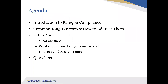Let's take a brief look at the agenda. First, we'll begin with a brief overview of Paragon Compliance — who we are and what services we provide. Next, I'll review some common 1095-C errors. We deal with a host of different clients from public and private sectors with unique compliance challenges, and we'll go through the more common errors, explain what causes them, and how best to address and avoid them. We'll also discuss Letter 226-J — what these letters are, what to do if you receive one, and most importantly, how to avoid receiving one. We'll finish by answering your questions.